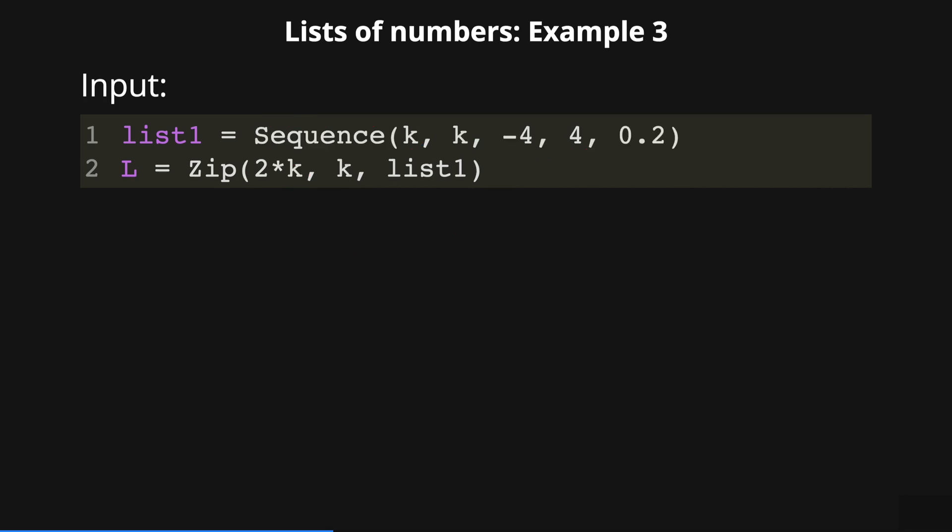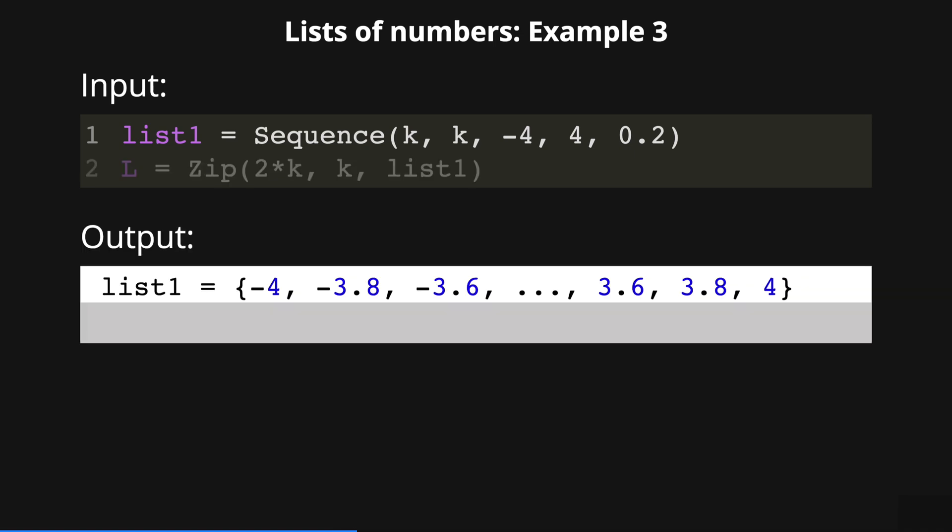Okay, let's check one more example of list of numbers. In this case, list1 creates a sequence of numbers from minus 4 to 4 with an increment of 0.2. Notice I now use the sequence command. Then in the zip command we define the expression 2 times k where k is the variable that belongs to list1.